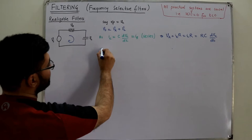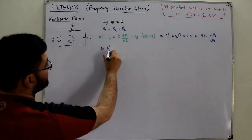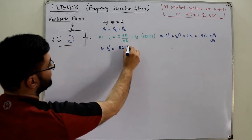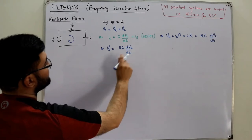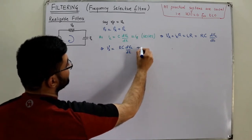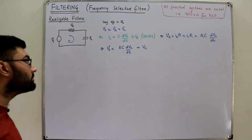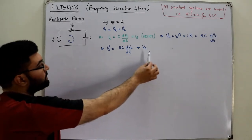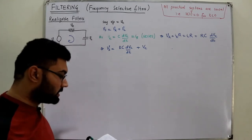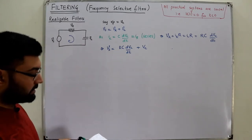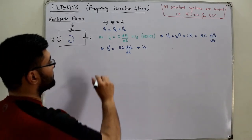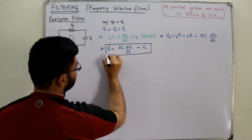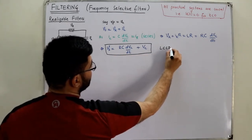Substituting into the KVL equation: VS = RC · d(VC)/dt + VC. I have represented VR in terms of VC, where VC is the output and VS is the input. This gives us the desired linear constant coefficient differential equation.